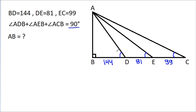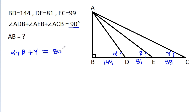Suppose this angle is alpha, this angle is beta, and this angle is gamma. Then alpha plus beta plus gamma is equal to 90 degrees. We have to find AB.